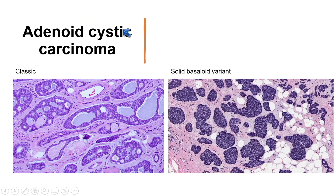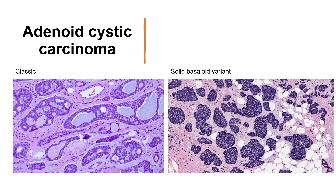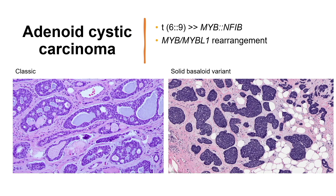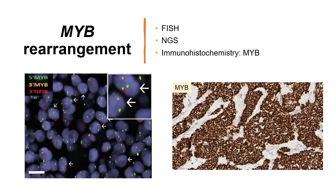For tumor classification, certain special histological subtypes of breast carcinomas have characteristic somatic genomic alterations. In difficult cases, we could use these alterations to help confirm the diagnosis. For example, adenoid cystic carcinoma has MYB-NFIB rearrangement or MYB-L1 rearrangement, or MYB amplification. I don't always do this testing — if histology is consistent, I'll go ahead and make the diagnosis — but in difficult cases, we can do in situ hybridization, sequencing analysis, or immunohistochemistry as a surrogate to detect the genomic alteration.